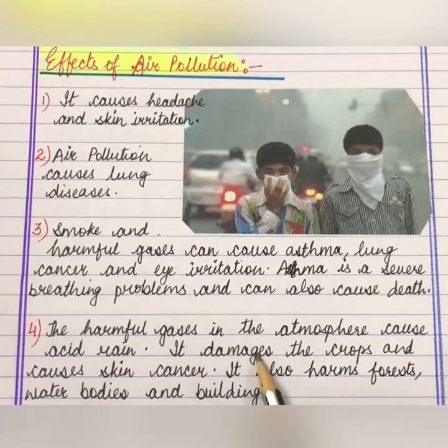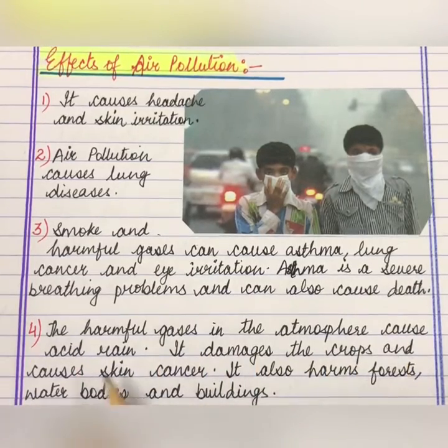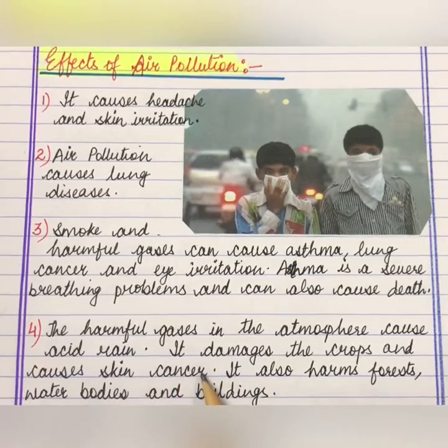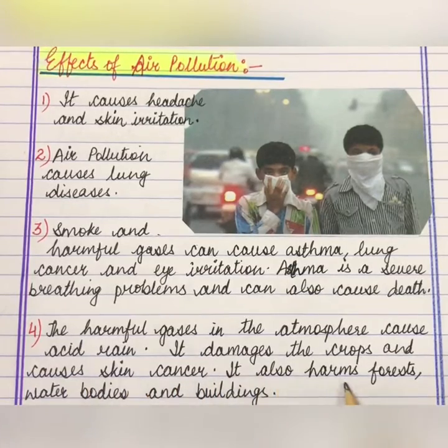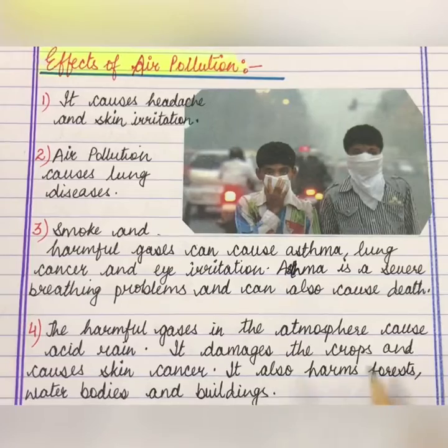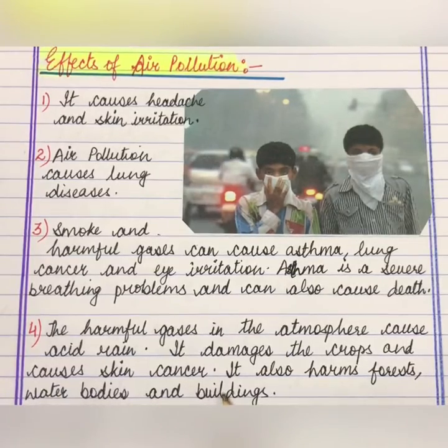The harmful gases in the atmosphere cause acid rain, which damages crops and causes skin cancer. It also harms forests, water bodies and buildings.